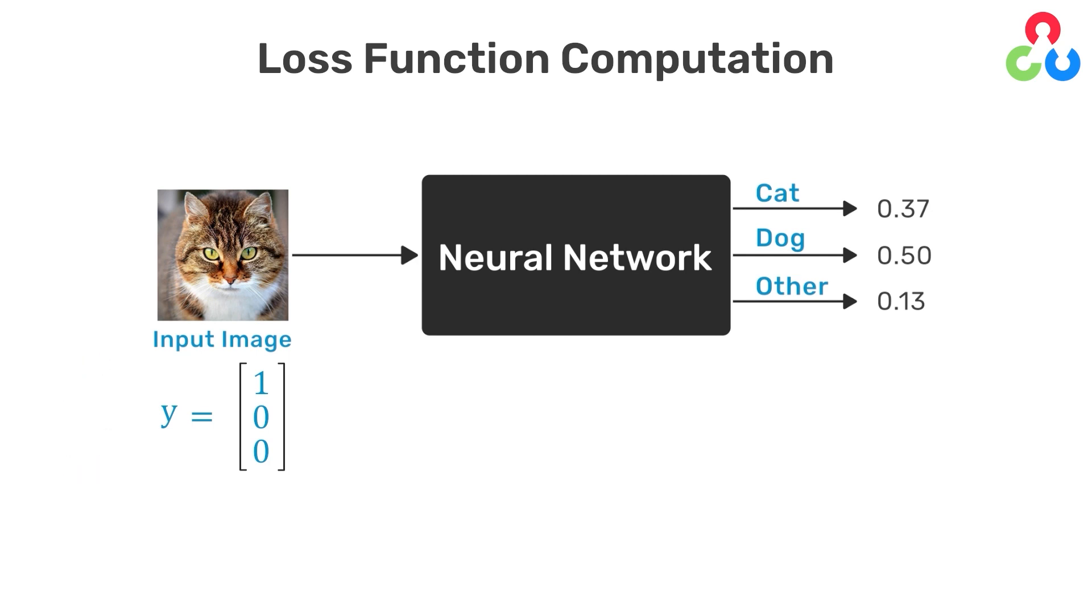So we can represent the classes numerically with a vector of length 3, where one of the entries is a 1 and the others are all 0s. So the vector 1, 0, 0 represents a cat, because we define the first output from the network to represent the probability that the input image is a cat.